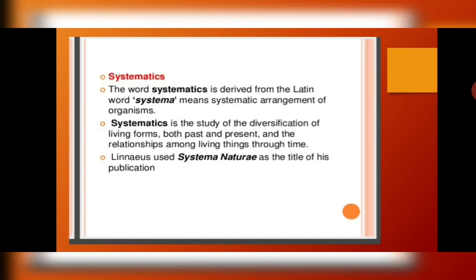What do we mean by systematics? The word systematic is derived from the Latin term systema, which means a proper or systematic arrangement of everything. Systematics is thus the study of diversification of living forms — both past and present — according to their relationships. Linnaeus used Systema Naturae as the title of his publication, in which he published the binomial nomenclature and the method to classify all organisms.